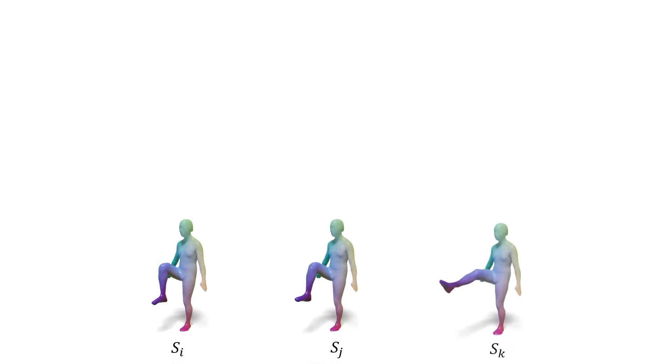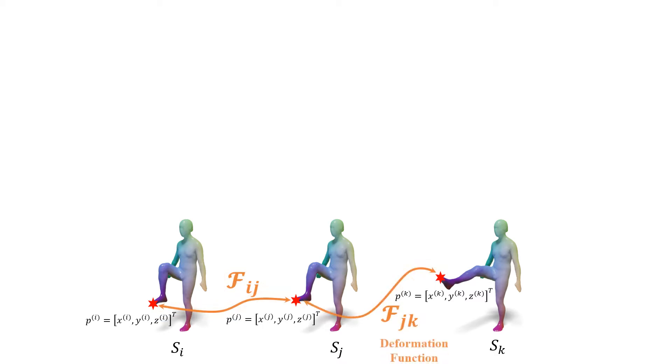Assume surface SI, SJ, and SK are deformed surfaces of one instance. If the surface topology is not changed, the points on the surfaces are associated with the well-behaved bijective deformation functions FIJ, FJK, and moreover, FIK.